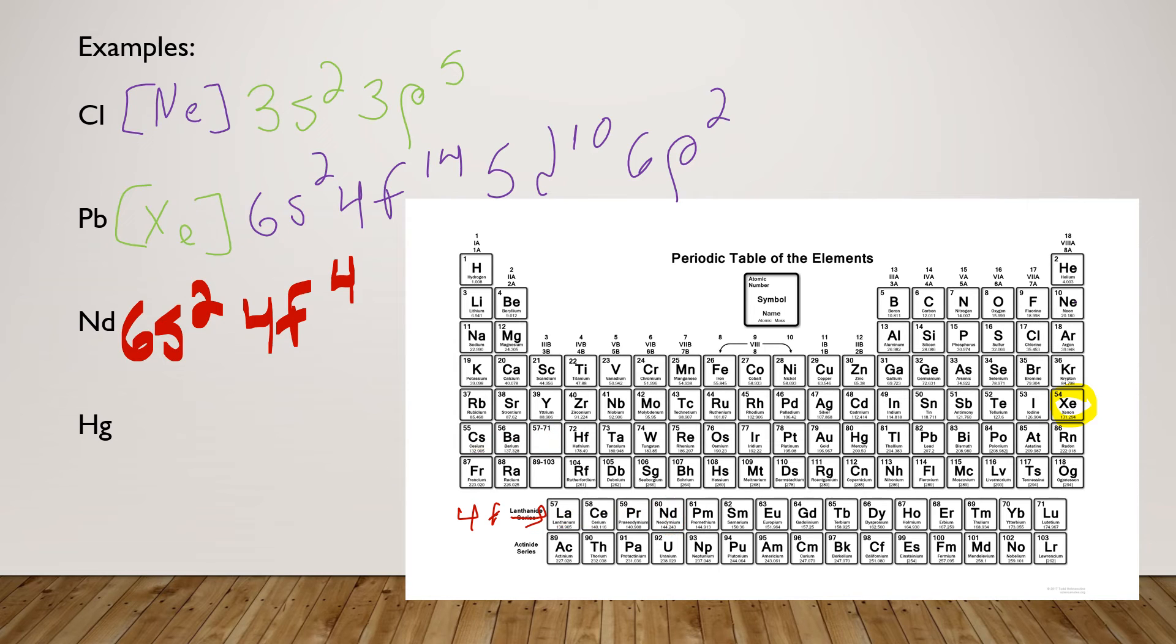Let's find mercury here. Mercury is right here in your periodic table. So we need to look again at the noble gas before mercury, which is xenon. Oh, I forgot to write my noble gas back there on neodymium. So that was xenon.